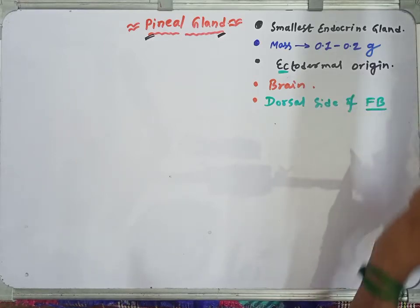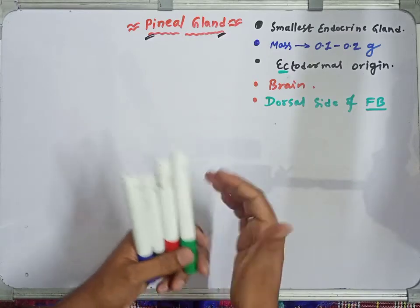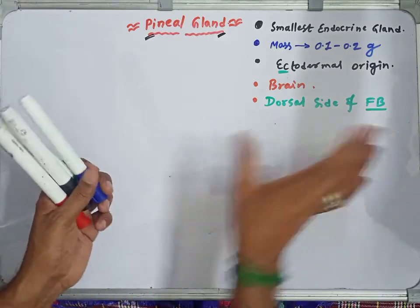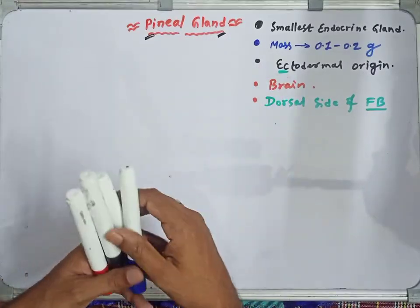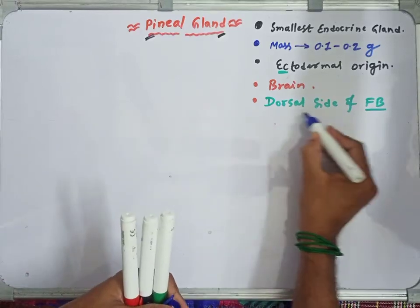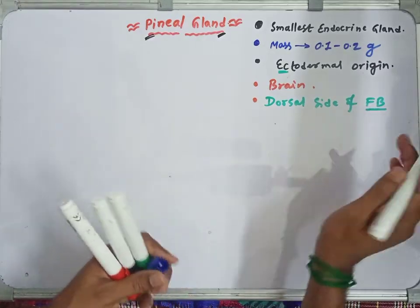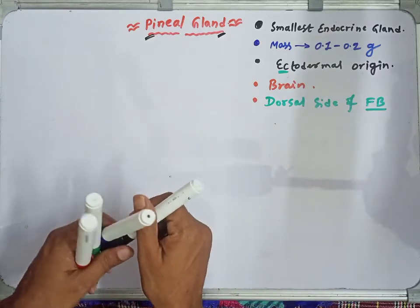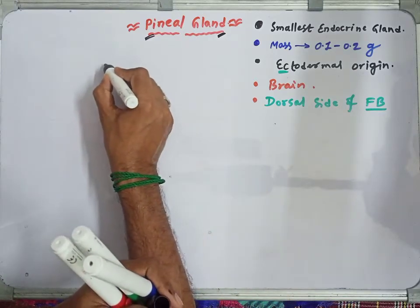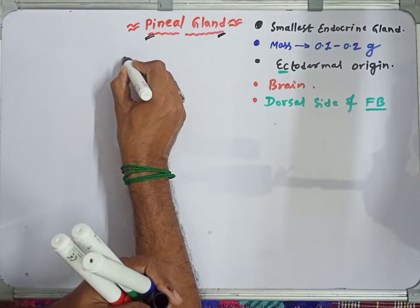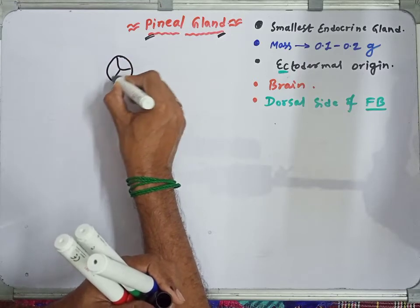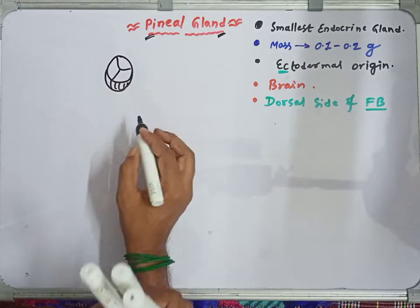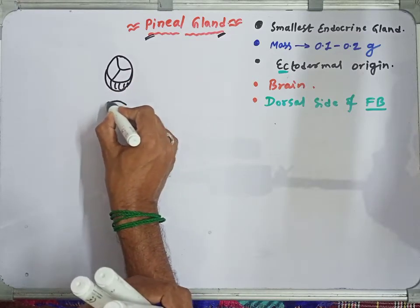The forebrain — abbreviated as FB, which stands for forebrain, not Facebook — is what we're discussing. Let's understand this diagrammatically. The forebrain's dorsal side is where the pineal gland is located. I've drawn a diagram here showing the forebrain; this is the diencephalon part of the forebrain.